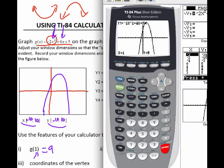g of negative 2, just type in negative 2, enter, and the y value is negative 15. It's off the screen because it's down here somewhere.